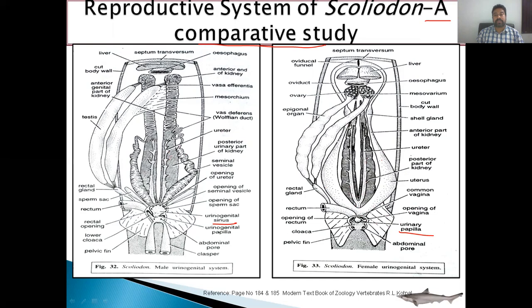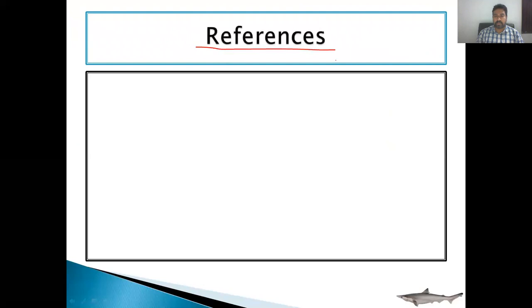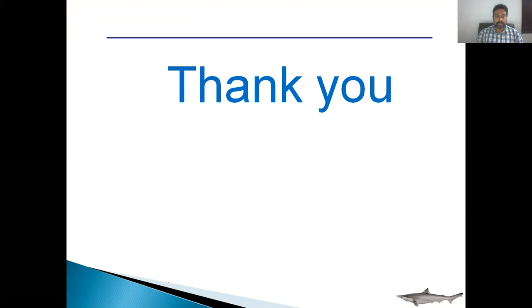Squalus is ovoviviparous, meaning it directly gives birth to young ones, and it forms a yolk sac placenta. We will discuss the yolk sac placenta in detail in our next video. Thank you. The references used are: Modern Textbook of Zoology — Vertebrates by R.L. Kotpal, and Chordate Zoology by E.L. Jordan. Thank you very much for watching this video.